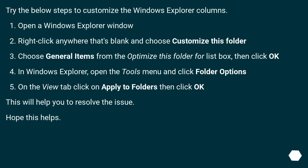Try the below steps to customize the Windows Explorer columns. Open a Windows Explorer window. Right-click anywhere that's blank and choose Customize this folder. Choose General Items from the Optimize this folder for list box, then click OK.